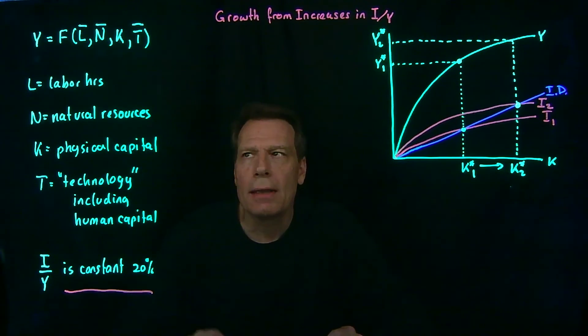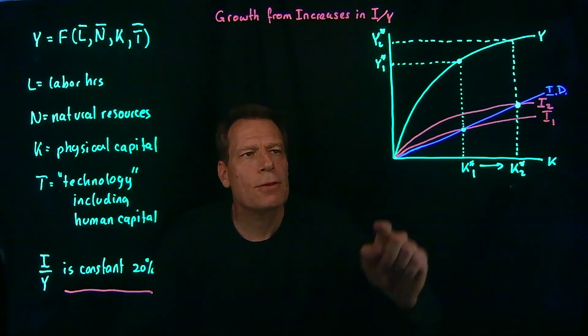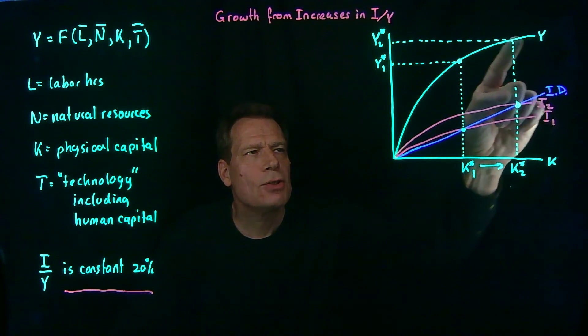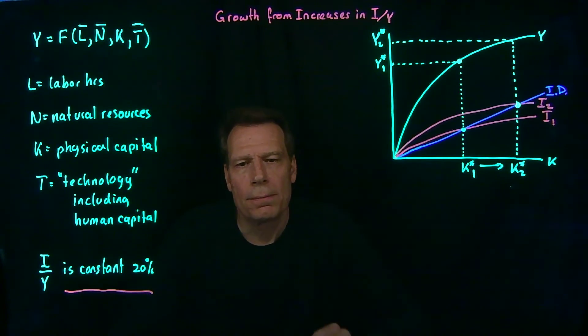We could also think about digging for more natural resources. If we dig for more natural resources then that too would rotate the GDP curve upward. And for any given level of capital we would get more steady state GDP. But again there's a limit to how many natural resources we can really find.